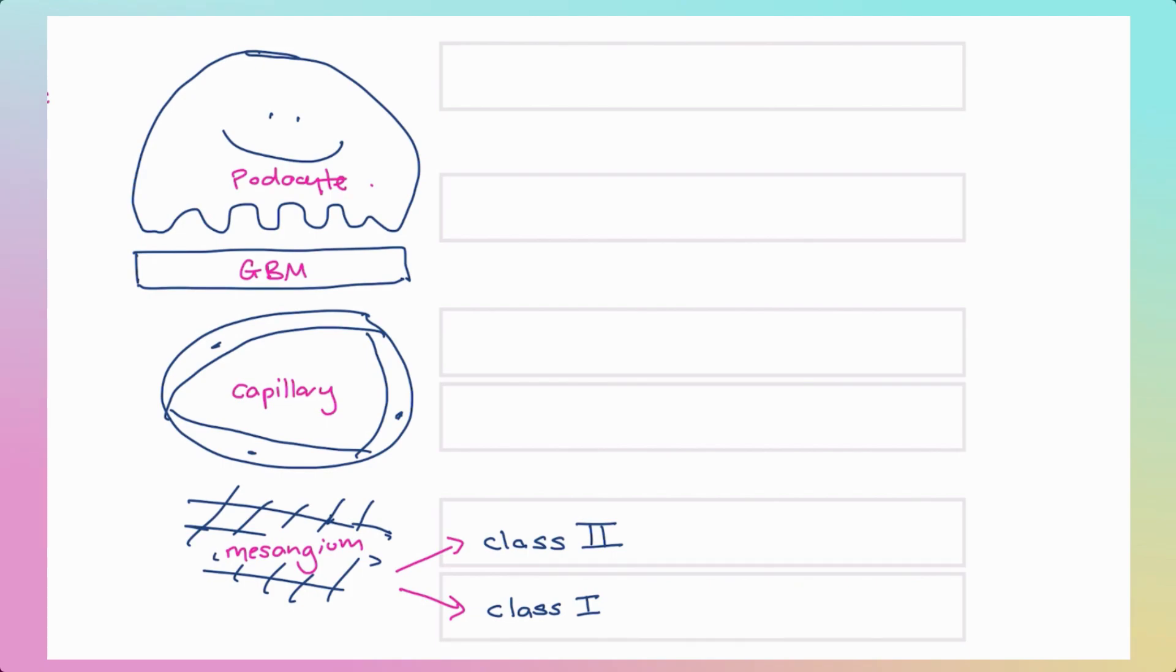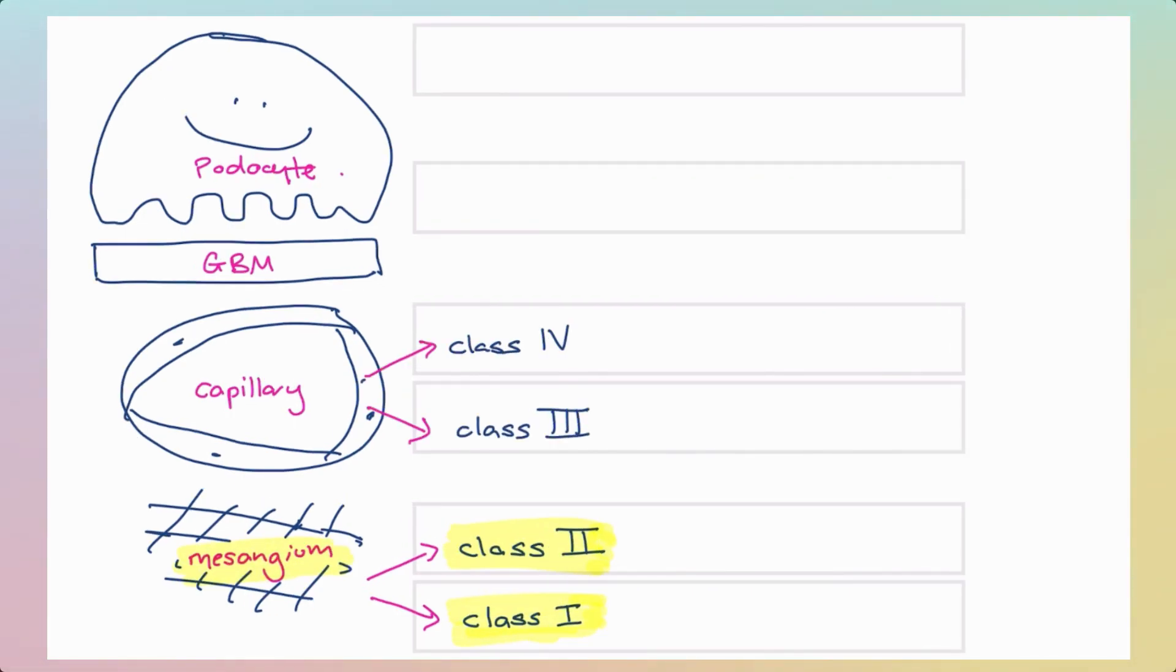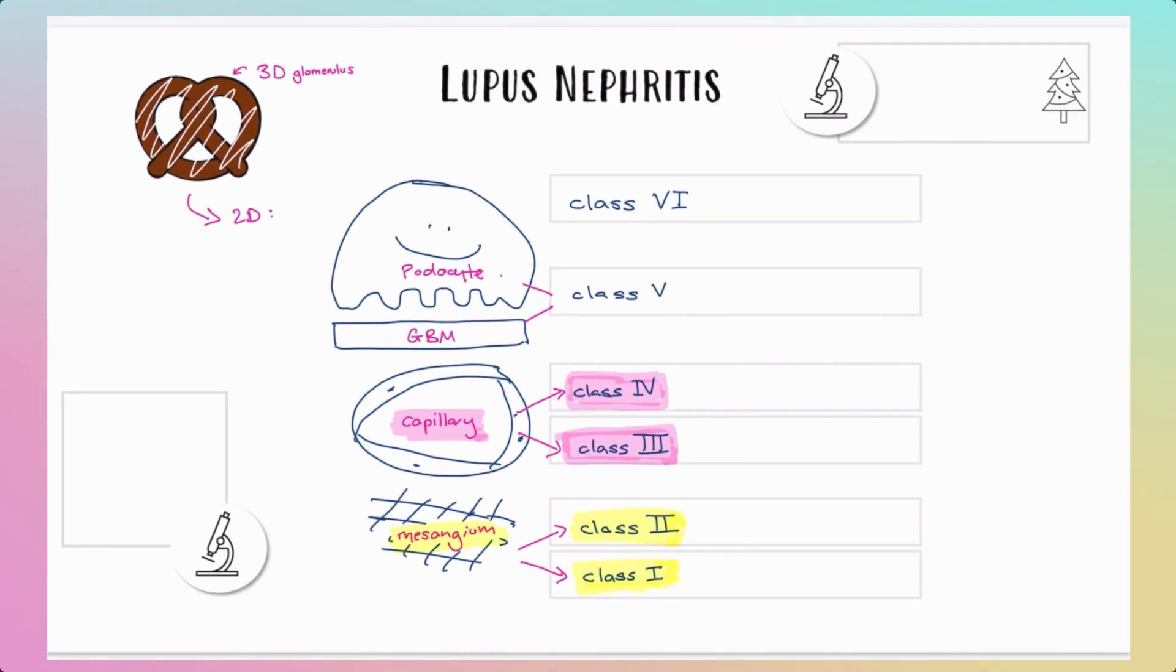The six classes of lupus nephritis are as follows: Class 1 and 2 involve the mesangium only. Class 3 and 4 involve the capillaries. Class 5 involves the glomerular basement membrane or podocytes. And class 6 means that there is scarring, sclerosis, burnt out permanent damage to the glomerulus. So that's the rough idea.